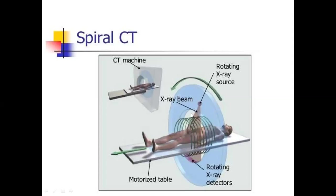In the helical or spiral CT scan, we use slip ring technology. What is slip ring technology? After every rotation, there is a pause — every X-ray tube is paused. But with slip ring technology, it cannot pause.